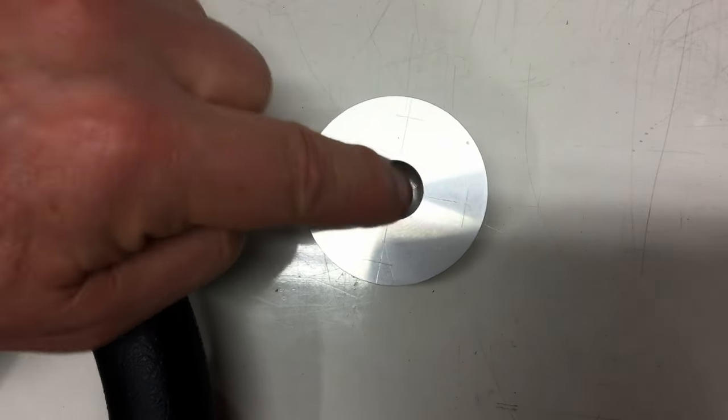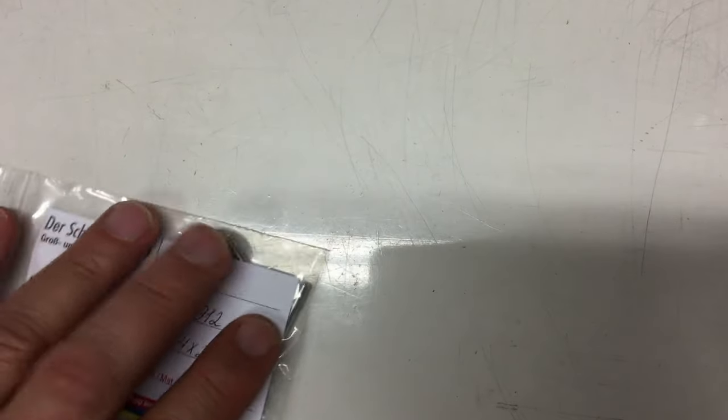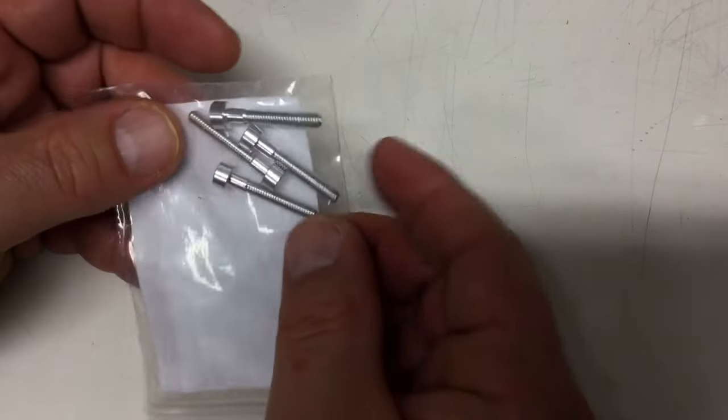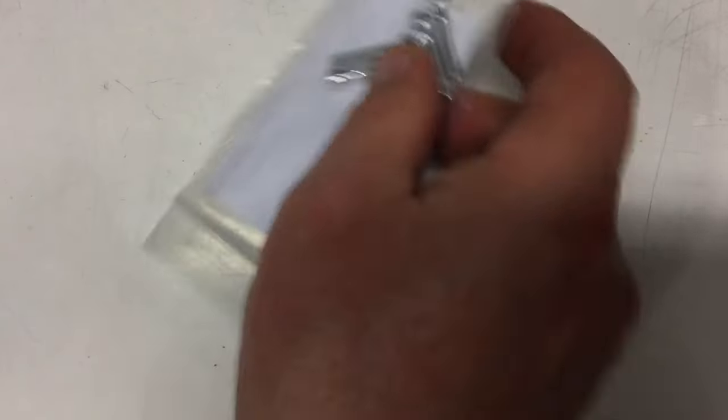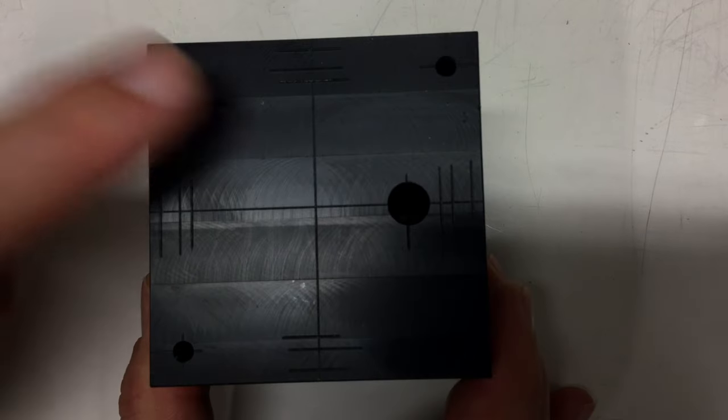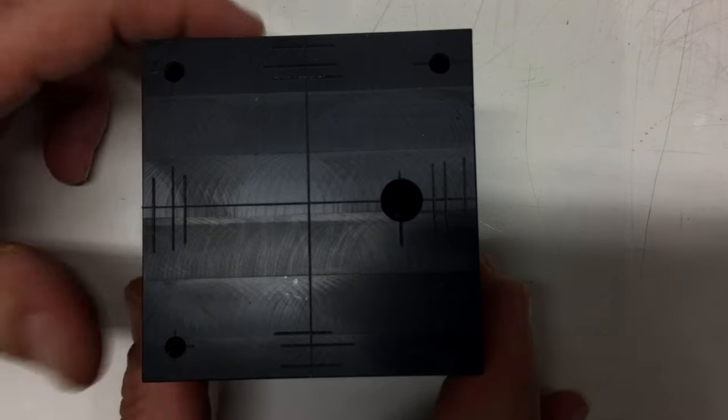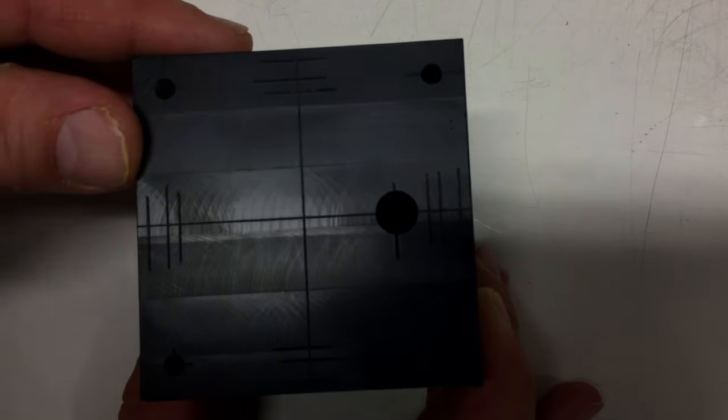Finally we have M4 bolts, four of them. These are for the back side to hold down the lid and compress that O-ring for water tightness. That's it.